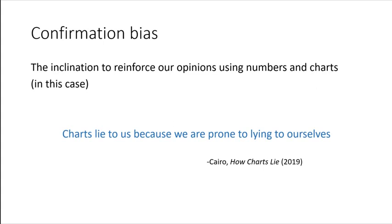Alberto Cairo said in his book How Charts Lie: charts lie to us because we're prone to lying to ourselves. It's about surrounding ourselves with things that agree with our own opinion of the world.